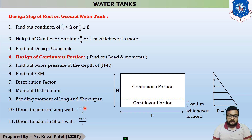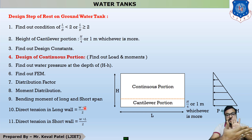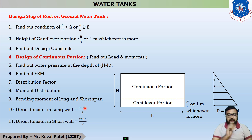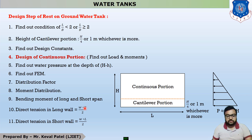Similarly, when water pressure acts in the B direction, half the pressure acts on each long wall. Therefore, the direct tension in the short wall equals W × L/2.